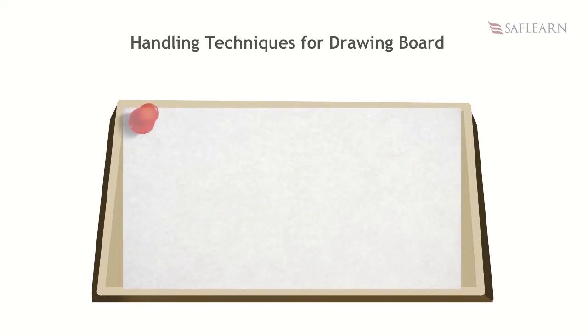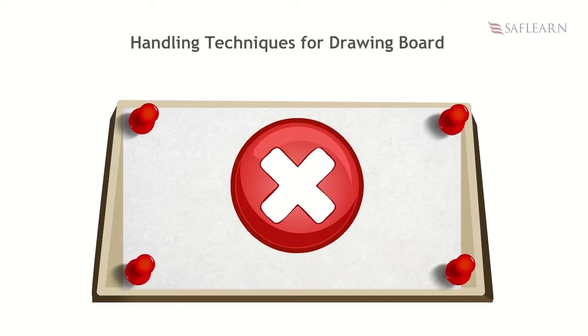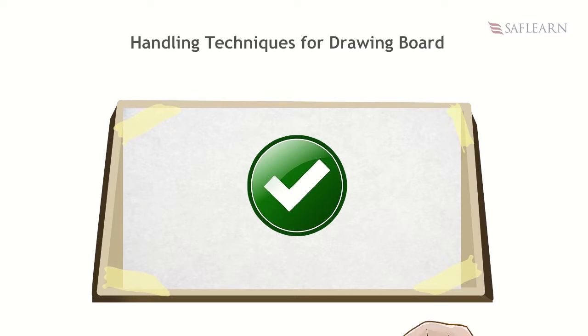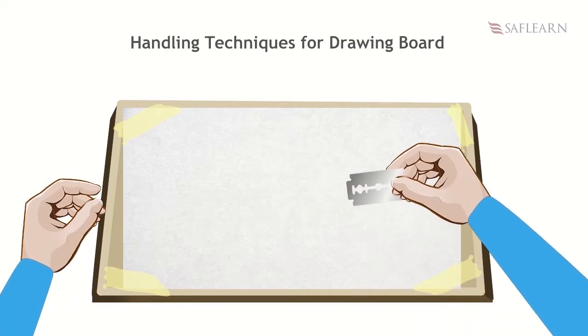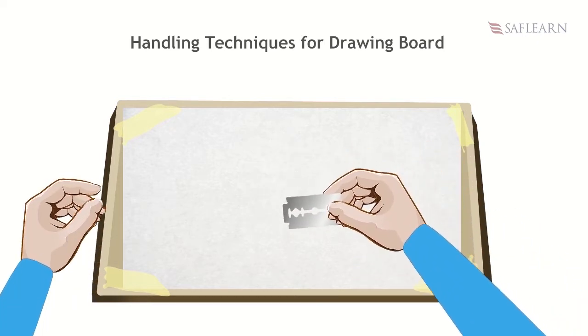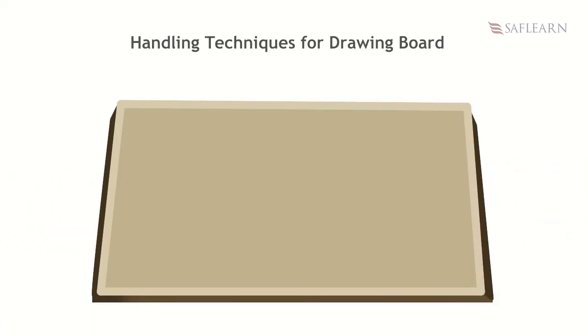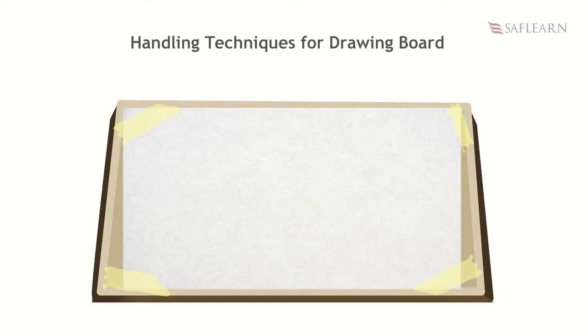When using a drawing board, do not use pins to fasten your paper to the board. Use tapes or clips. Do not use blade or knife to cut something on the surface of your drawing board. Always cover the surface with cardboard or thick paper. Keep the drawing board in a safe place when not in use.